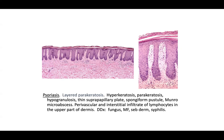Mycosis fungoides can look like this; in this example you don't see many epidermotropic cells so it's very low on the differential. Seborrheic dermatitis can look like a cross between psoriasiform and spongiotic dermatitis, but usually doesn't show this abundant psoriasiform hyperplasia with club-shaped rete ridges or as much hypogranulosis. In secondary syphilis you get elongated rete ridges but expect more plasma cells in classic examples for test-taking purposes.